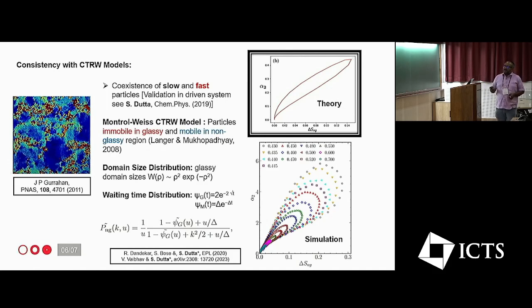So this was the dependence between this alpha_2 versus delta S_NG. That also shows this loop-like behavior, which we have validated in our molecular simulations.